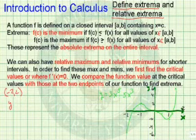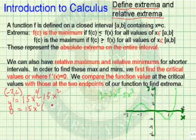We begin by taking the derivative of 3x to the fifth, which would be 15x to the fourth, minus 15x squared. We set this equal to zero so we can find the extrema. We can factor out a 15x squared and we're left with x squared minus 1.